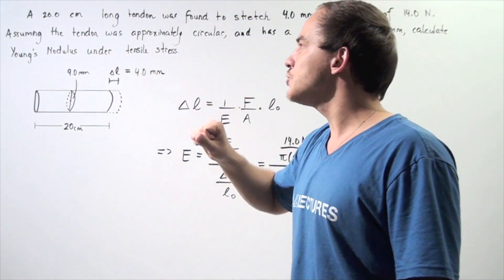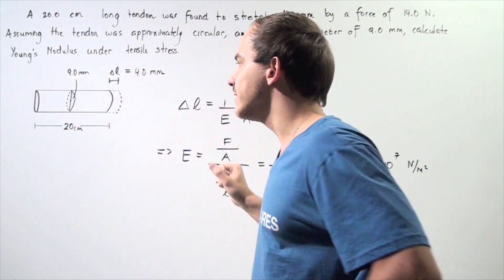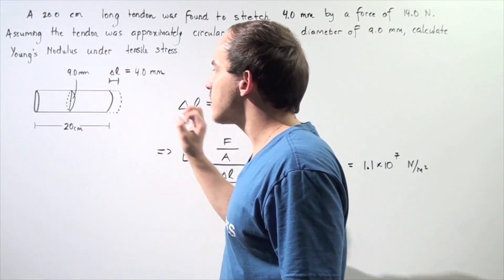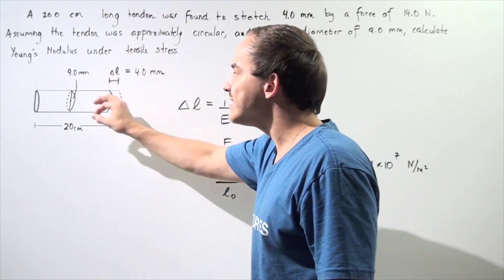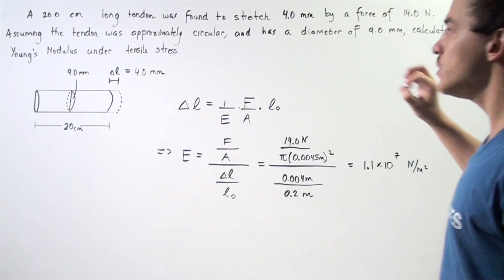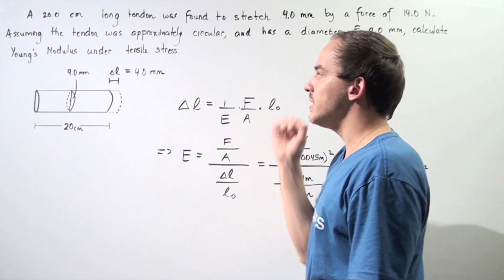calculate Young's modulus under tensile stress. Here we have the tendon, the length of the tendon is 20 meters, our diameter of the cross-sectional area of the tendon is 9 millimeters, and when the tensile force is applied and has a magnitude of 14 newtons, our tendon stretches a distance of 4 millimeters.